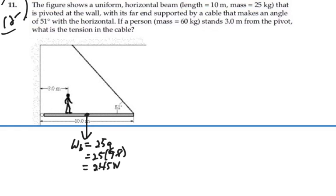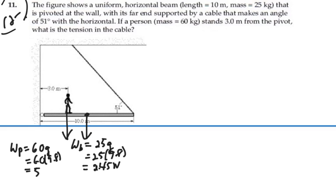We also have the weight of the person. That weight is equal to 60 times G, mass times G, so that would be 60 times 9.8, which is 588 Newtons. So we've got those two forces.